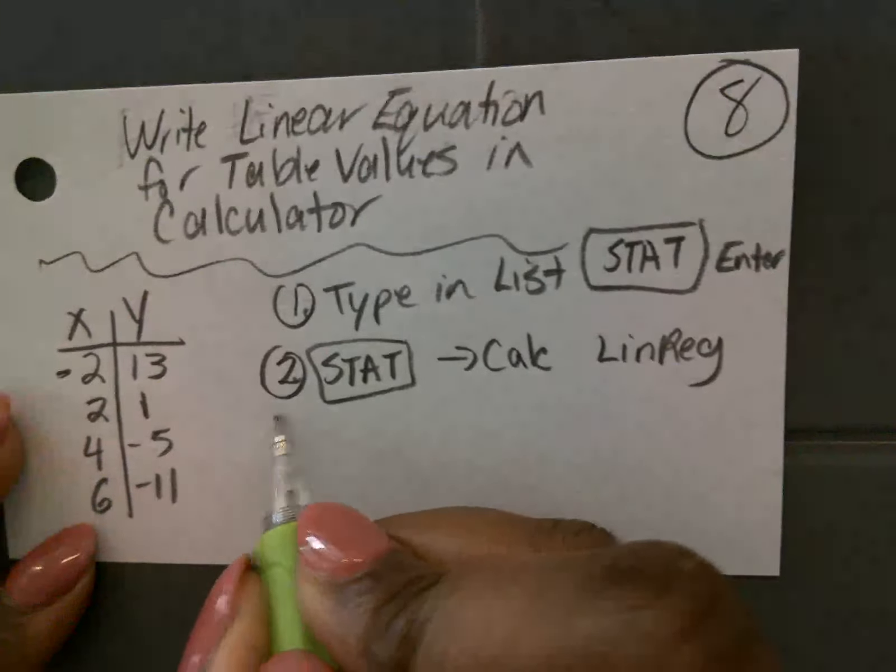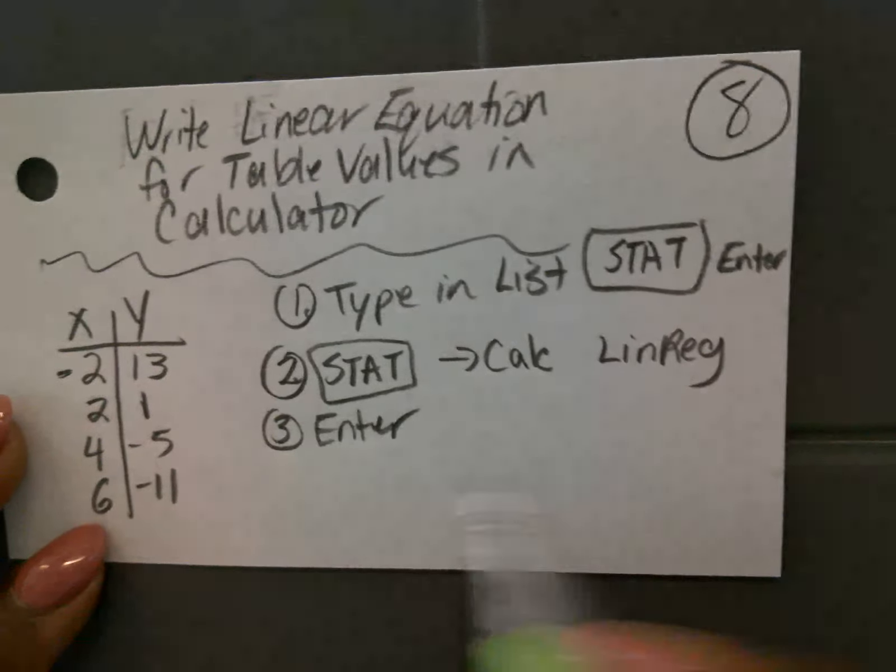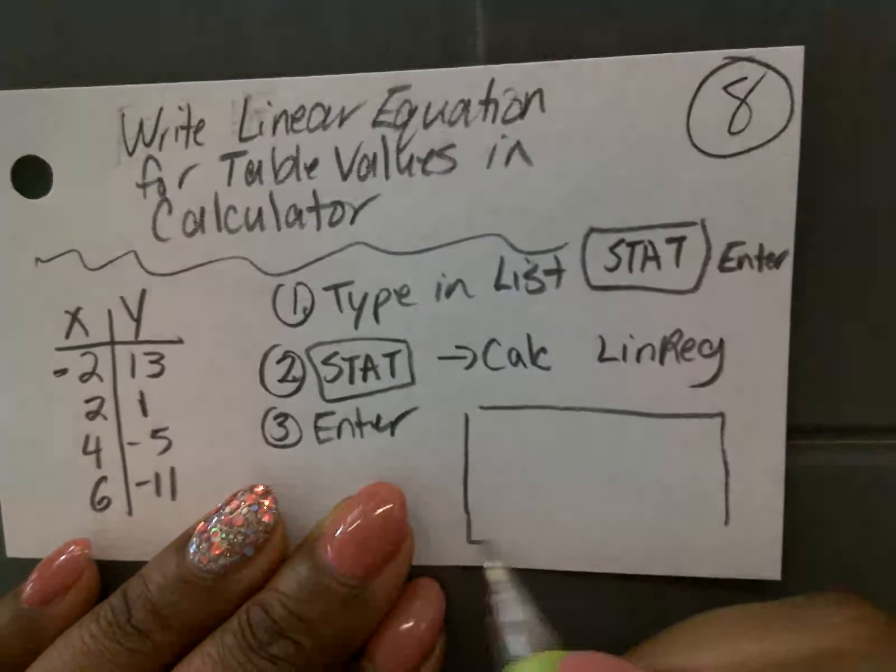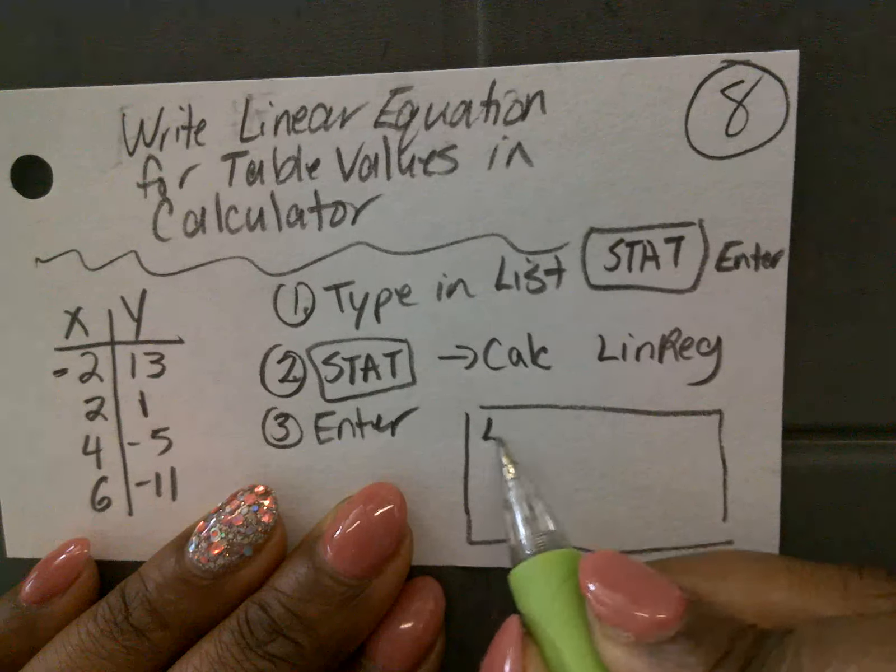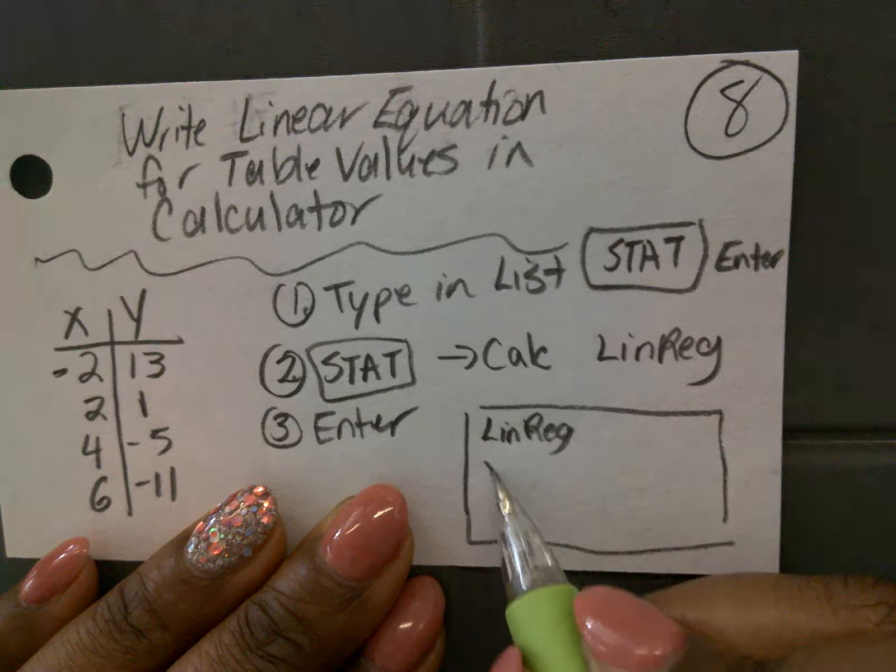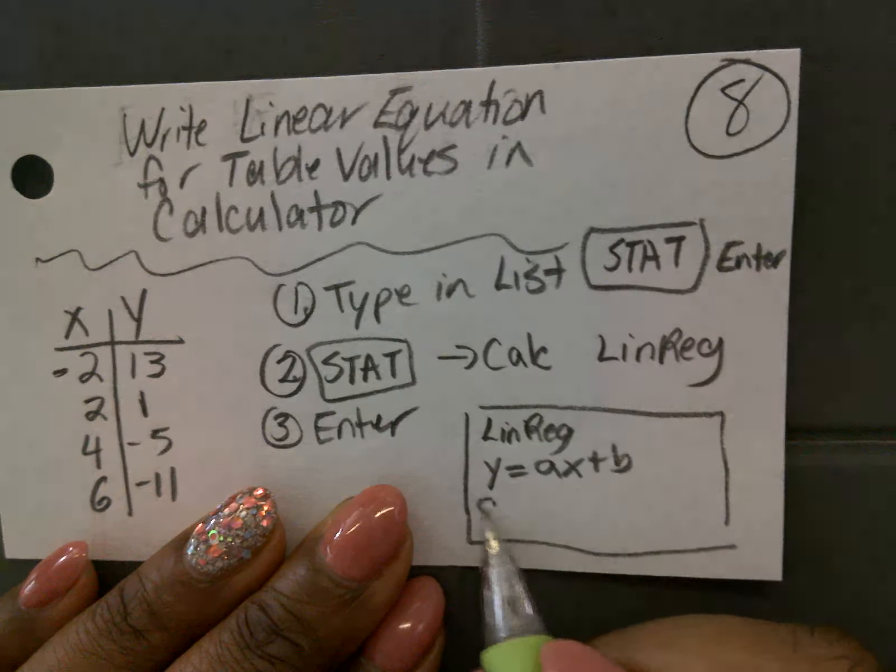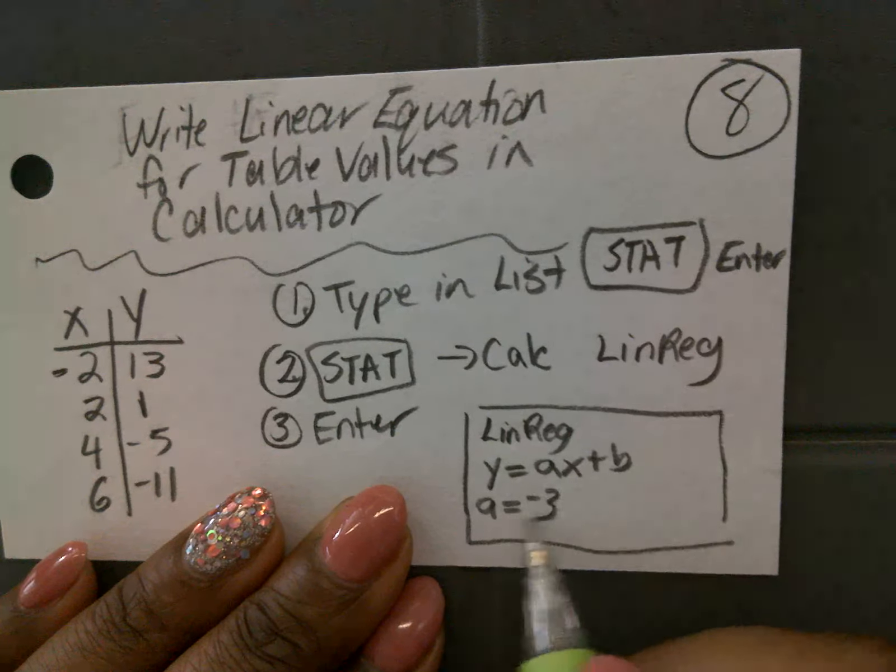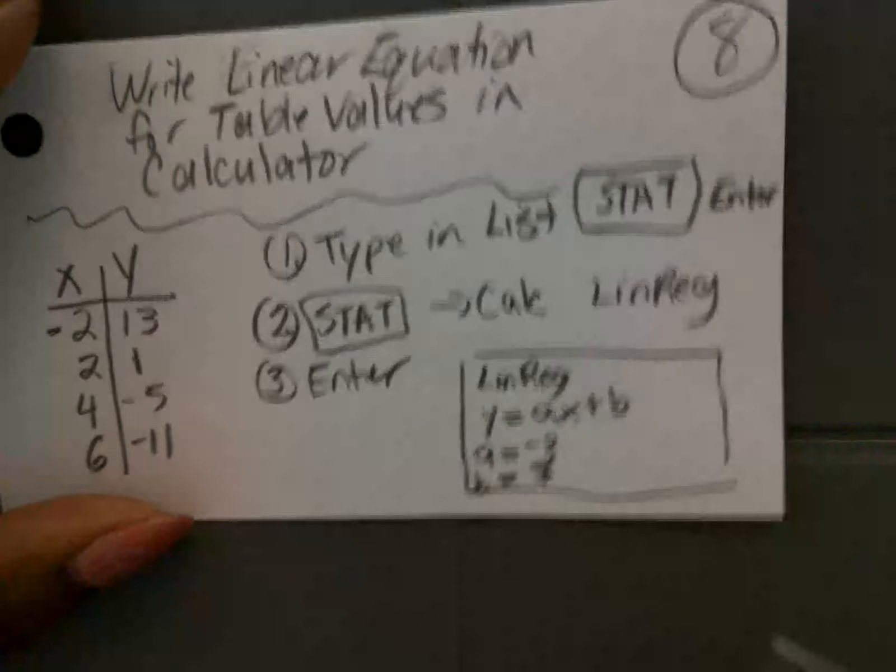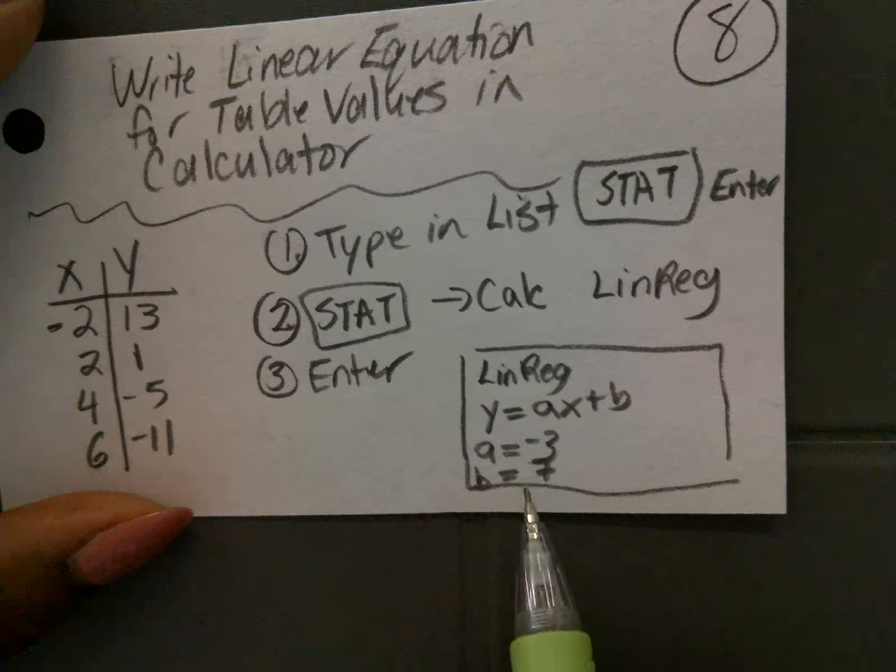And then in the calculator, your little screen, you should see in the corner, LinReg, y equals ax plus b, and it'll give you a value for a, negative 3, and it'll give you a value for b, which is 7.